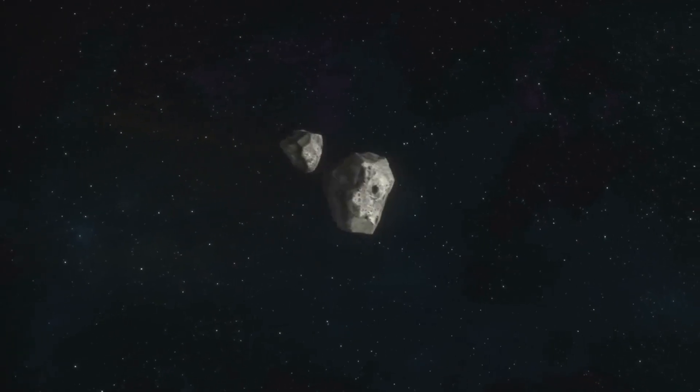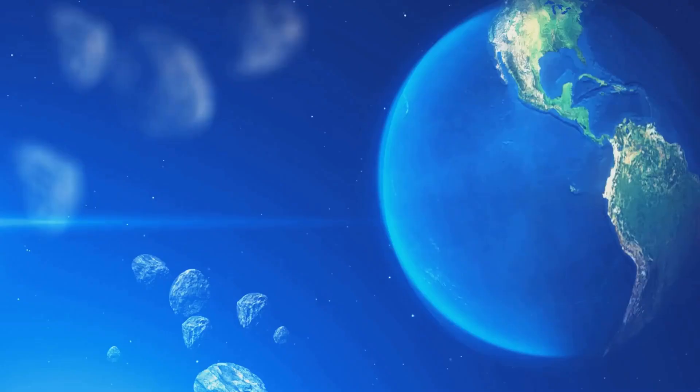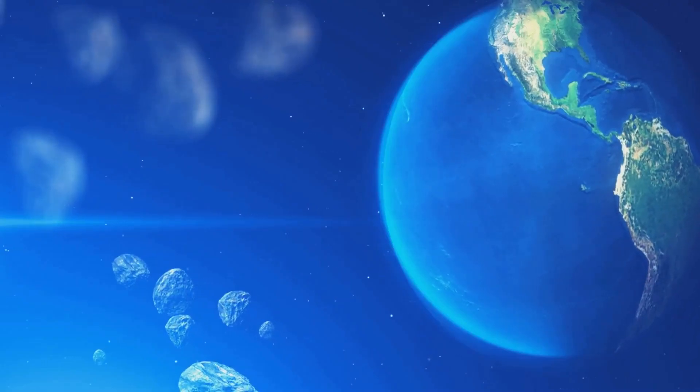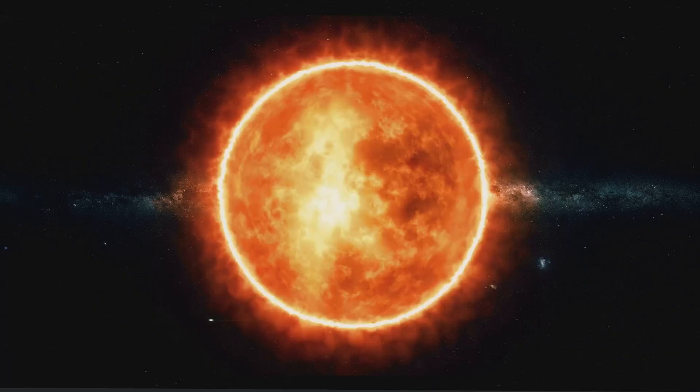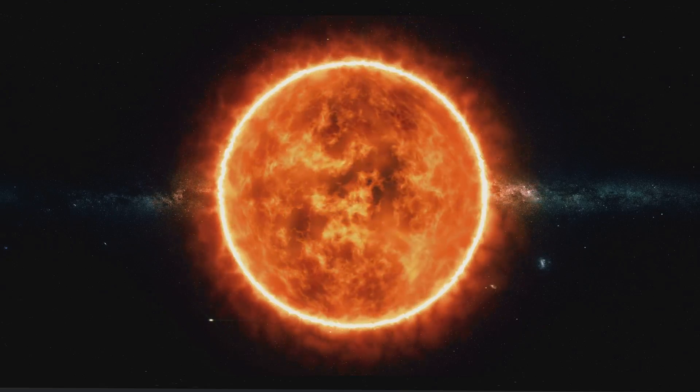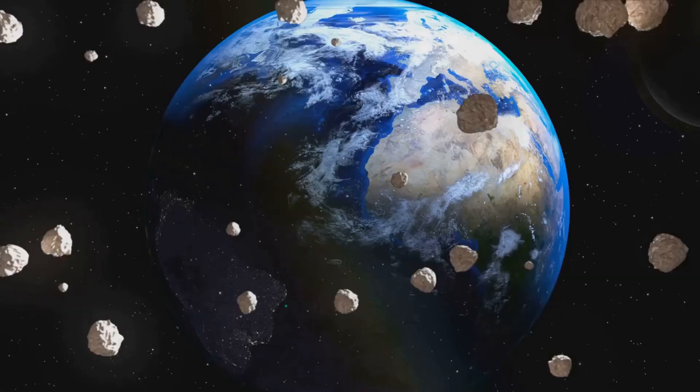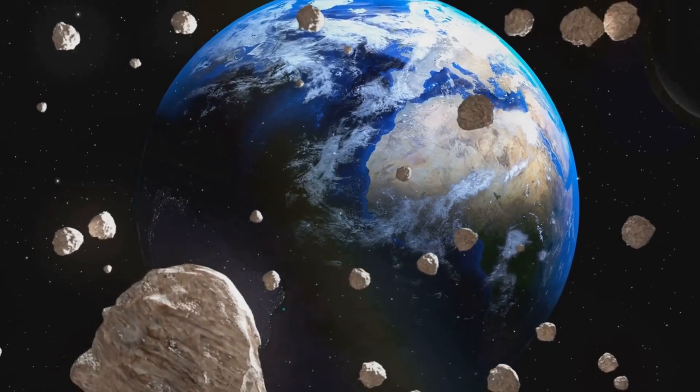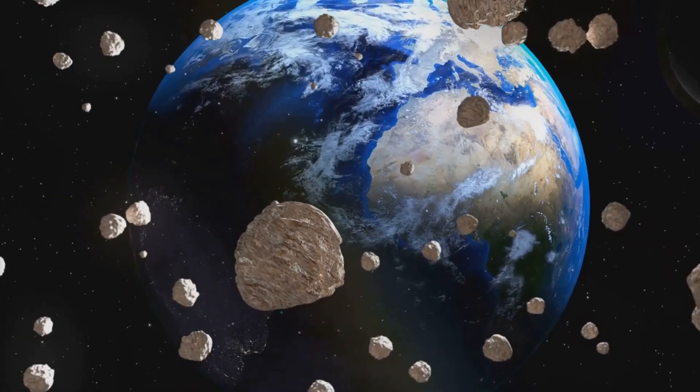Planetesimals attracted more dust and smaller objects with their growing gravitational pull. As they gobbled up surrounding material, they grew larger and larger. The inner region of the disk, closer to the sun, was hotter. Here, rocky materials like iron and silicates could condense and coalesce.